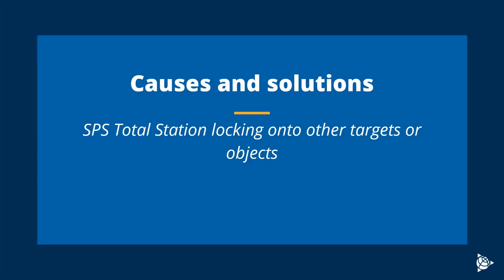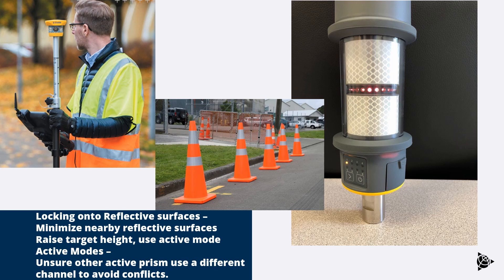The next problem is the SPS Total Station locking onto other targets or objects. In passive mode, it's possible for the total station to lock on to reflective surfaces nearby — this could be a reflective vest or reflective tape on a road cone or sign. Ways to minimize this include covering your vest momentarily, making sure there are no reflective objects in the background or foreground, or trying to raise the target well above head height to keep it clear of any reflective surfaces. Alternatively, you could use active mode.